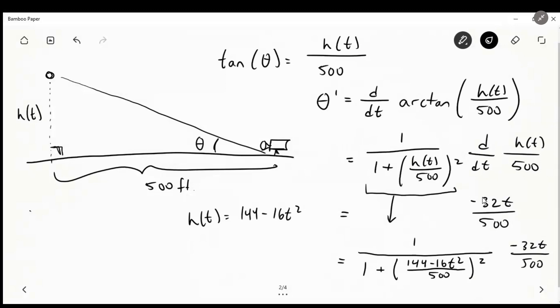And now it's asking us to solve theta prime of 1 and theta prime of 2. And those are both going to be in radians per second. So to do that, you just plug in 1 into this equation, because this is theta prime in terms of T. And that will give you the radians per second that our camera angle is moving down, because as the object falls, the camera also moves down.